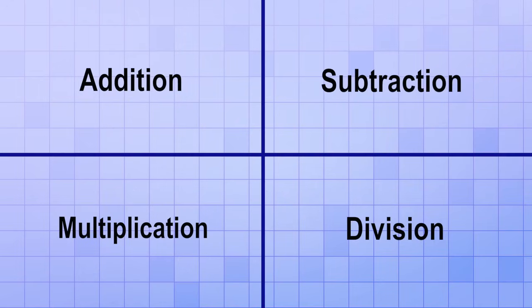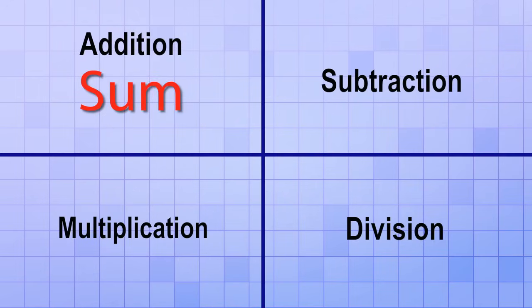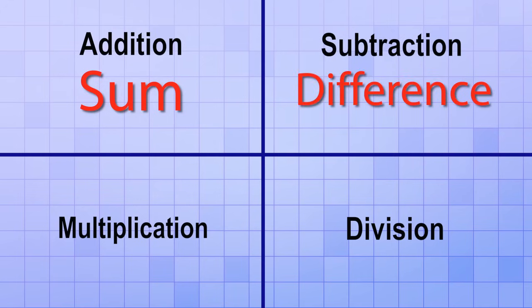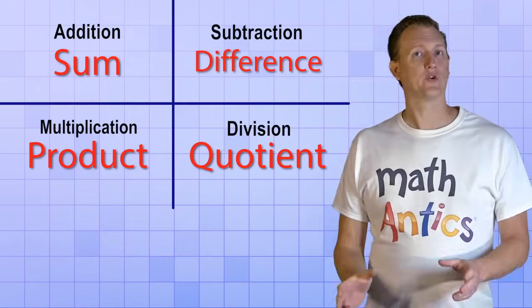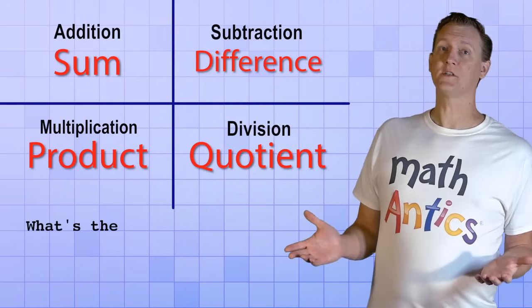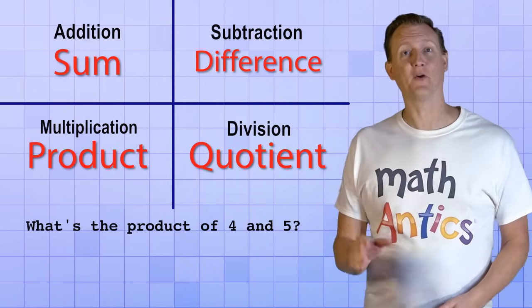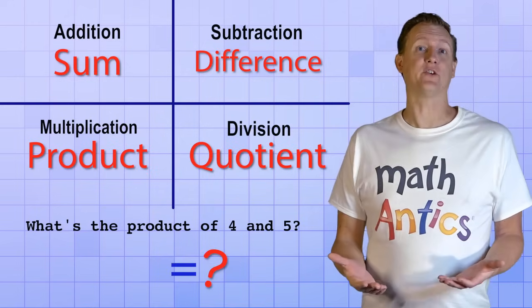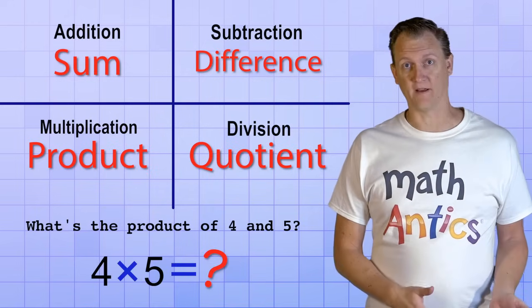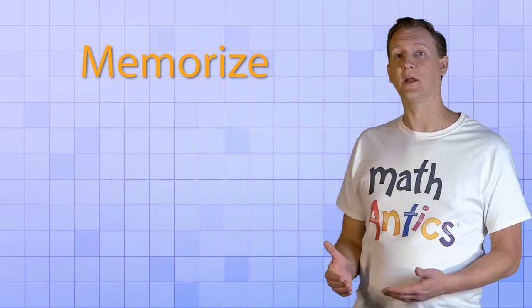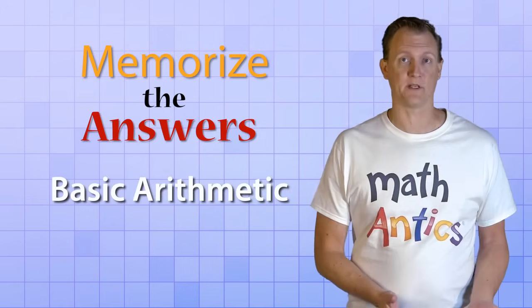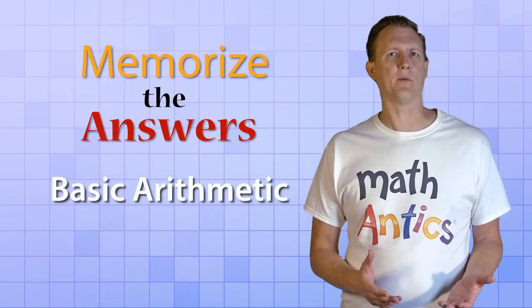The answer to an addition problem is called a sum. The answer to a subtraction problem is called a difference. The answer to a multiplication problem is called a product. And the answer to a division problem is called a quotient. Try to memorize these, so that if someone asks you, what's the product of 4 and 5? You'll know that they're really asking, what answer do you get if you multiply 4 and 5? In a minute we'll see why it's so important to memorize the answers to some basic arithmetic problems — the ones involving the numbers 1 through 10.